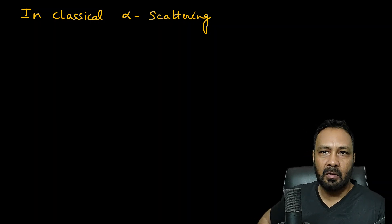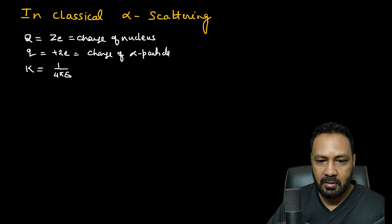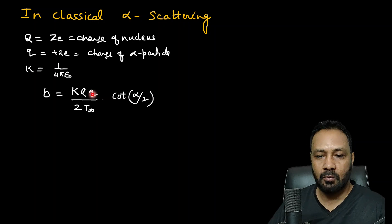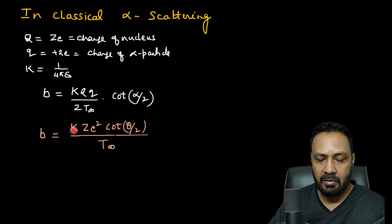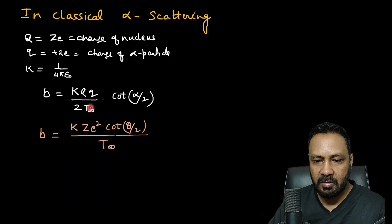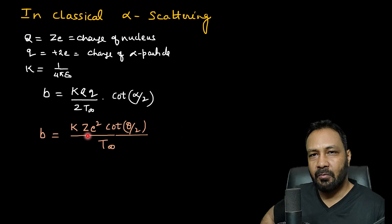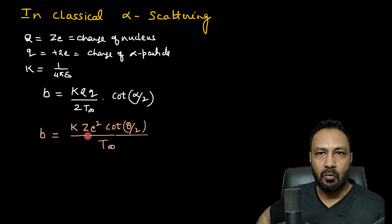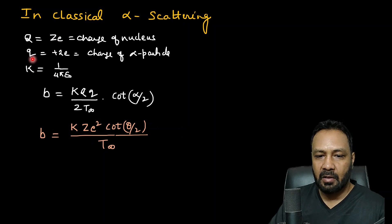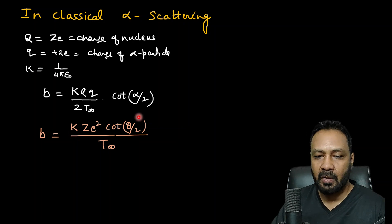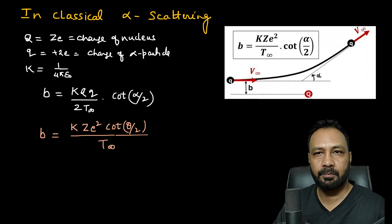For classical Rutherford alpha scattering specifically, the alpha particle is the nucleus of helium with two protons and two neutrons, so its charge is q = 2e. If the target nucleus has atomic number Z, its charge is Q = Ze. Substituting, we get b = (kZe²·cot(α/2))/(T_infinity), which is the standard Rutherford scattering formula.